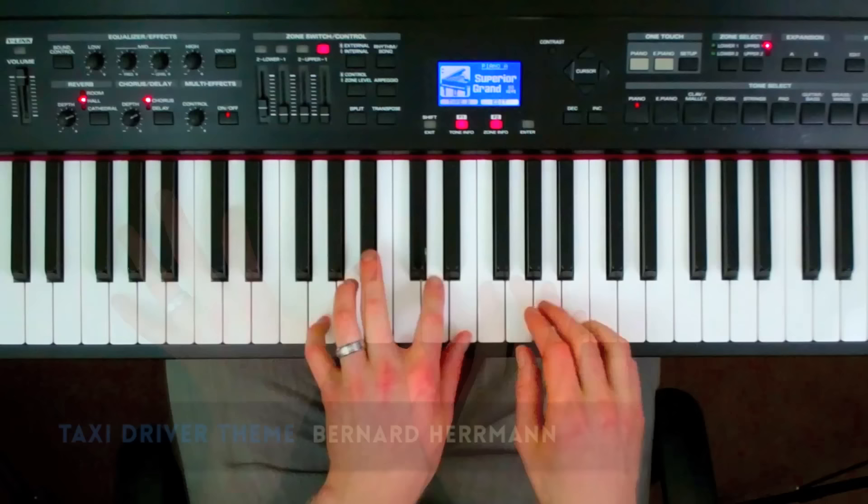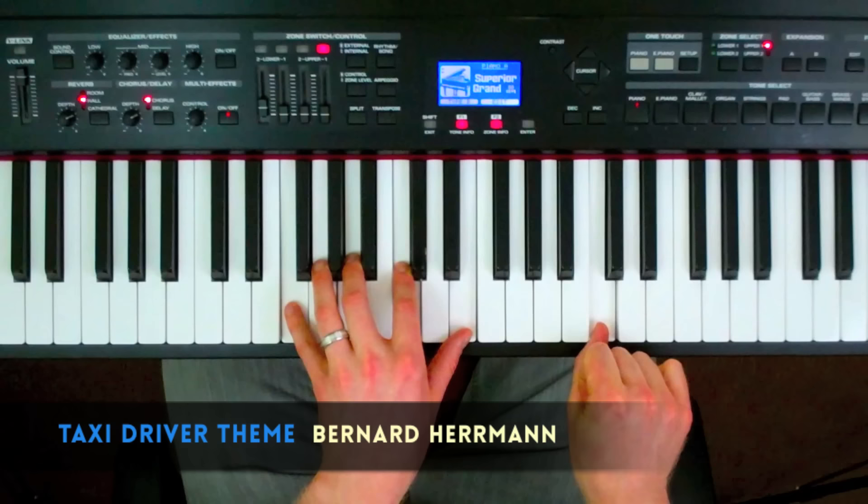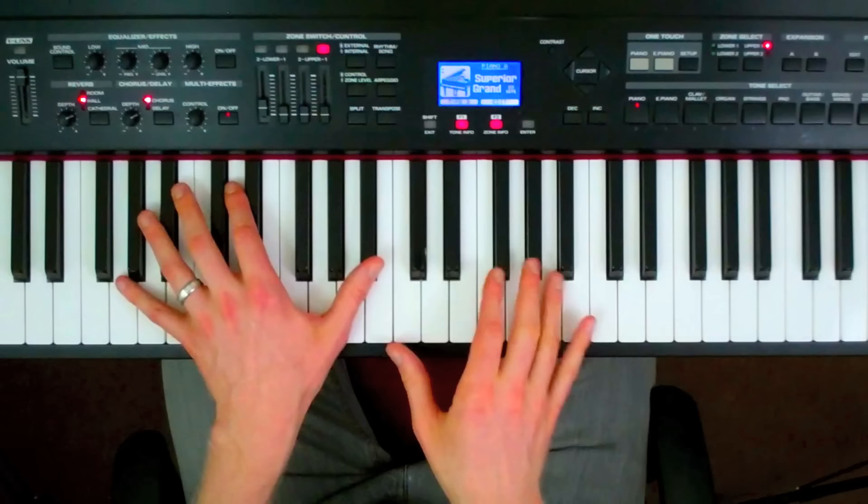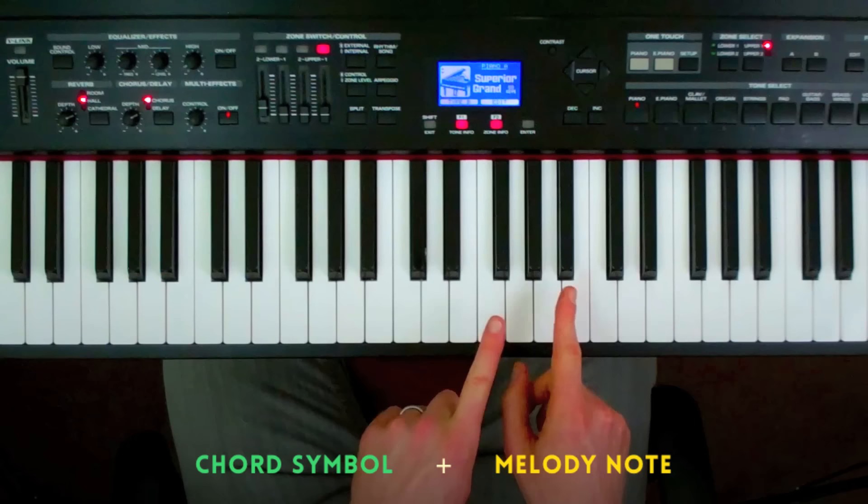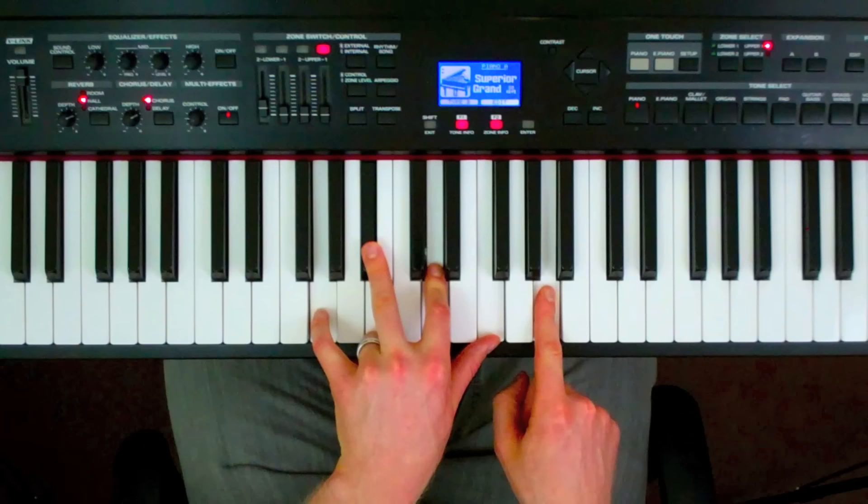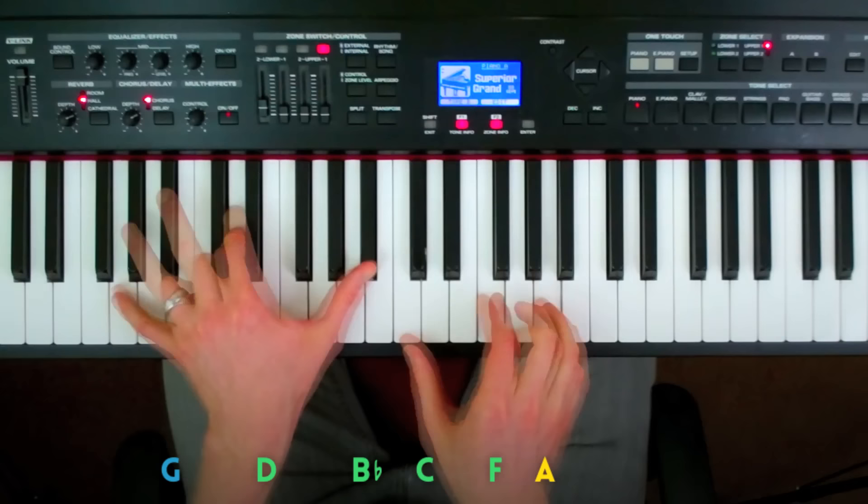So let's take a look at the taxi driver theme composed by Bernard Herrmann. So here I was just playing it with the left hand voicing and the melody in the right, but if I want to play it with some two-handed voicings, I'll basically just look at what the chord symbol is and then what the melody note is and I'll try to find a chord voicing which just happens to have the melody note as its top note. So first up, we have a G minor 7 chord and the melody note is an A, so the 9th. So on a G minor 7 voicing that has the 9th as its top note, I'll usually go with this one.